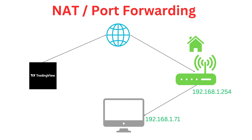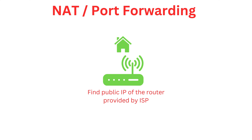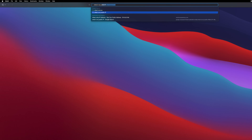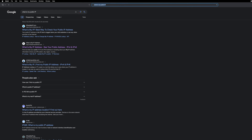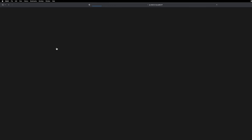But if you try to give the Mac's 192 address in TradingView, it will not be reachable. The reason is these are private IP addresses and are only accessible within your home network. So how do we solve this routing problem? Every home router will have a public IP address — let's find that first.